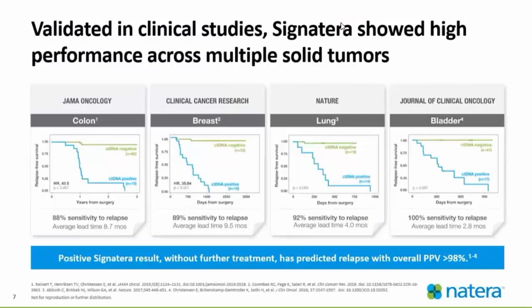Signatera has been validated in clinical studies across multiple solid tumors. Tonight we are talking about colorectal cancer; however, this has also been studied in breast cancer patients, lung, as well as bladder. If a patient has a positive Signatera result without further treatment, there is a predictive relapse with an overall PPV — positive predictive value — of greater than 98%. Basically, if ctDNA is negative it stays negative, and if it is positive, that patient needs to be treated.